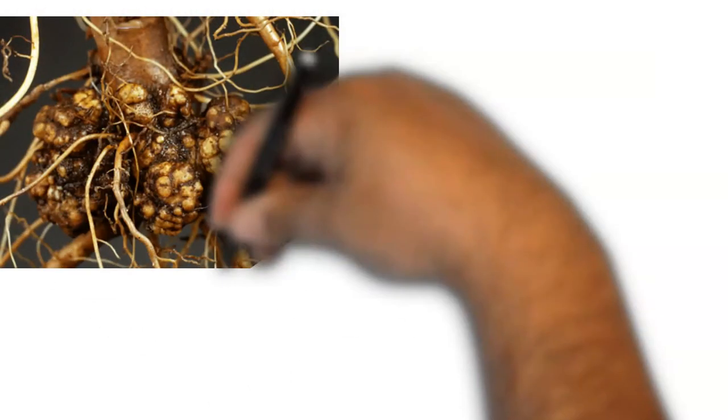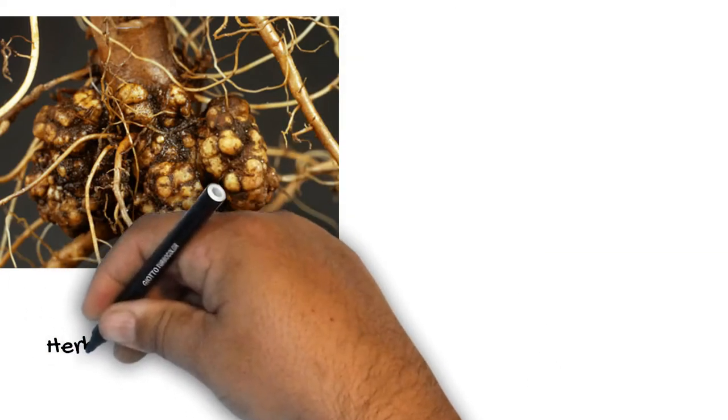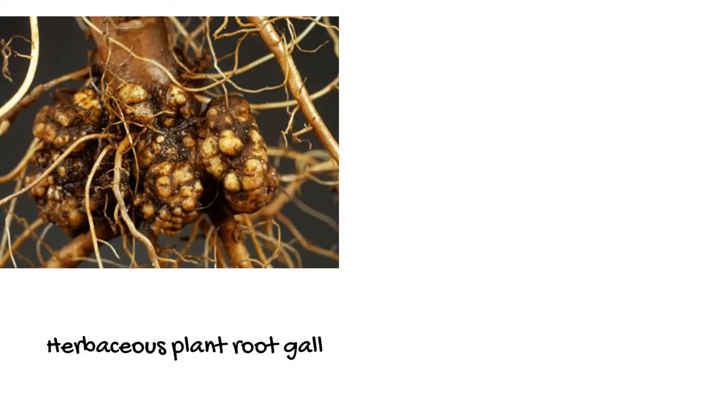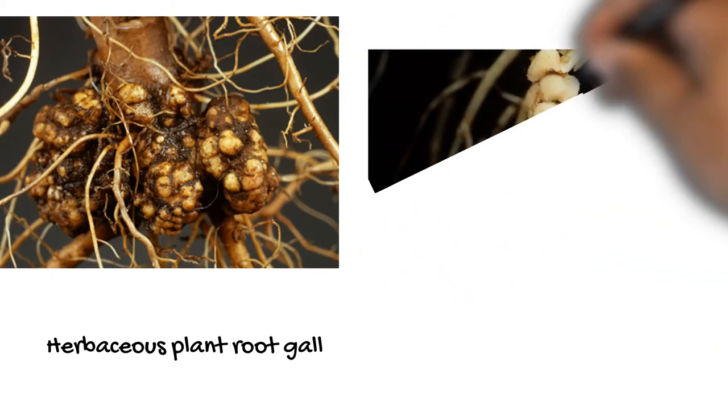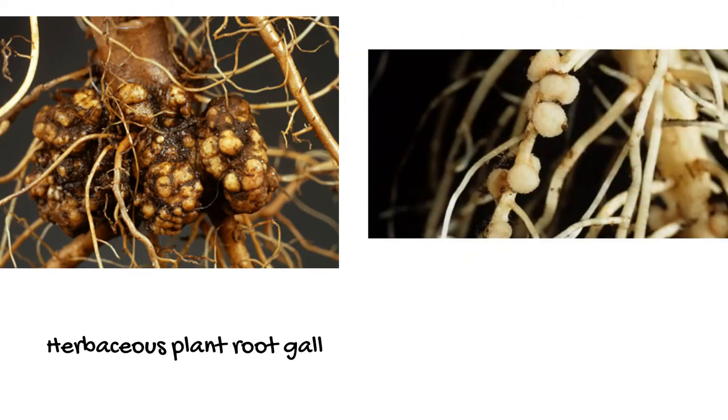Knock knock. Morphologically similar swellings caused by crown gall should not be confused with the harmless nitrogen-fixing nodules, which you can see on your right, produced on the roots of many members of the pea family.